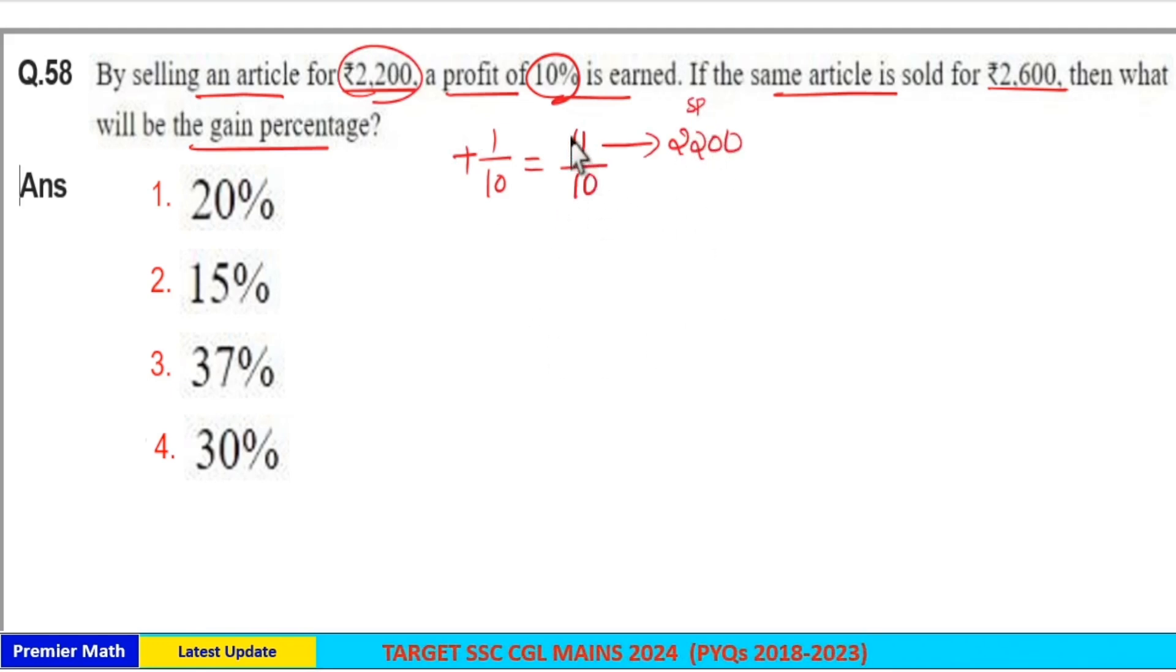Now, 11 goes two times in 22, so one part is 200. Then 10 parts is the cost price, which is 10 into 200 equals 2000 rupees. So this is the cost price.